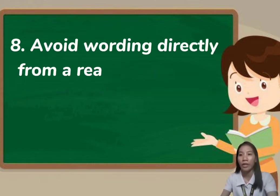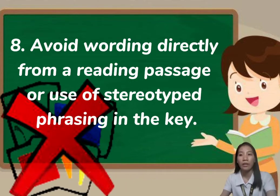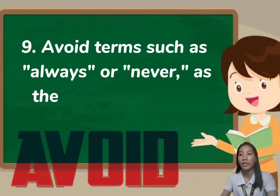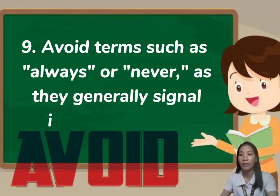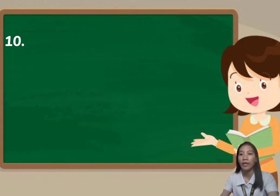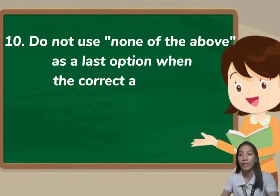Use only correct grammar in the stem and alternatives. Avoid wording directly from a reading passage or use of stereotyped phrasing in the key. Eliminate excessive wording because that will confuse students and lead them to waste time. Avoid terms such as 'always' or 'never' as they generally signal incorrect choices. Avoid items based on personal opinions unless the opinion is qualified by evidence or a reference to the source.